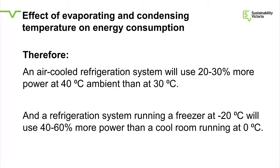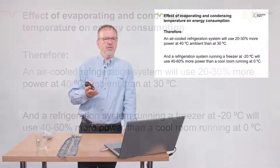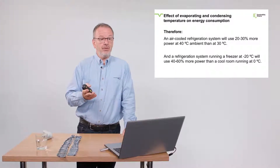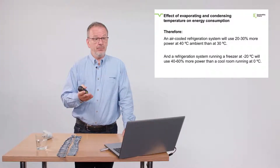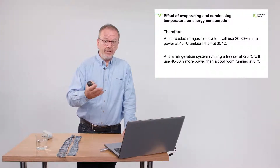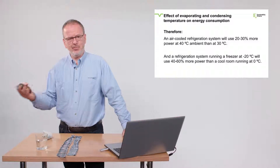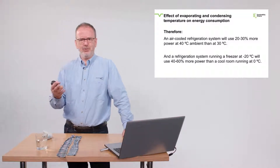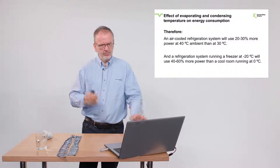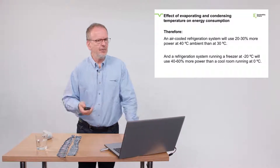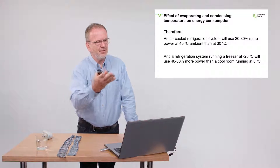On the other side of the refrigeration system, a freezer running at negative 20°C compared to a cool room running at zero will show a 40 to 60 percent difference in power. So clearly, running a freezer room costs a lot more than running a cool room — and this gives you the actual numbers.